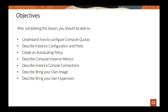Through this lesson, we're going to cover a few topics. We'll start with compute quotas and give you an overview of how to set up quotas for your compute resources. We're going to describe instance configuration and pools, how to create autoscaling policies for horizontal growth, and show a demo. We'll also cover compute instance metrics, instance console connection for when you don't have network access, how to bring your own image to OCI, and options to bring your own hypervisor.